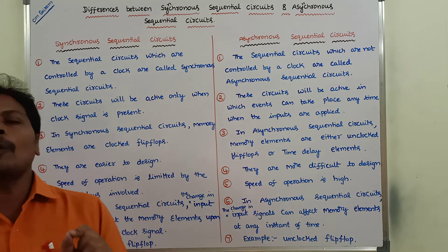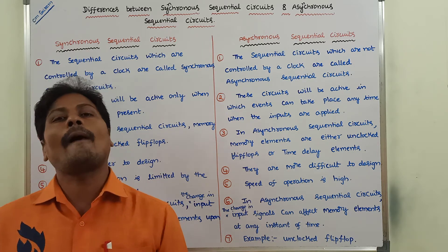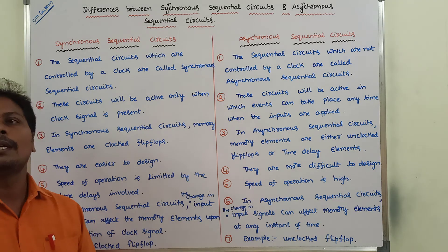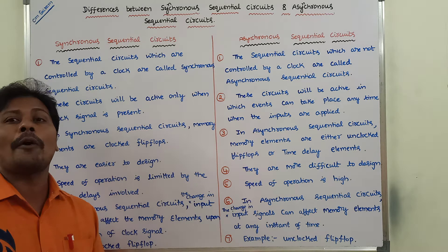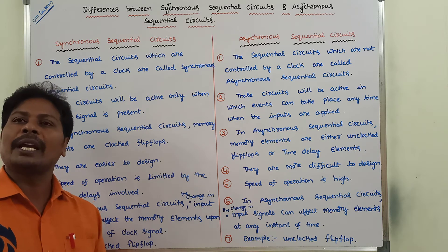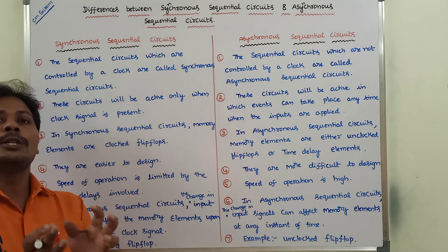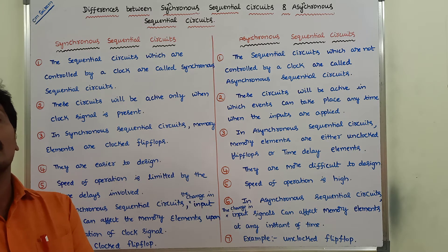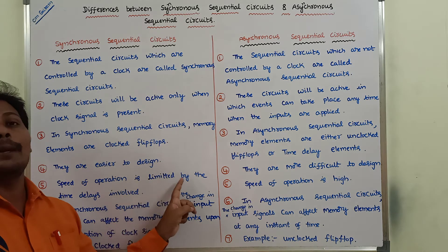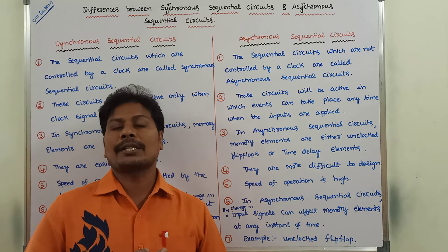Fifth point: in synchronous sequential circuits, the speed of operation is limited by the time delays involved. Because memory elements are involved, and the past history of the inputs — that is, past outputs — are stored in memory elements. So, because of that reason, the speed of operation is limited by the time delays involved. But in the case of asynchronous sequential circuits, the speed of operation is high.